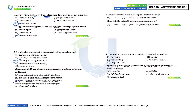Third question: How many methods are there in plain table survey? There are a total of 4 methods. Option D is the correct answer. The first method is radiation, the second method is intersection, the third method is traversing, and the fourth method is resection.